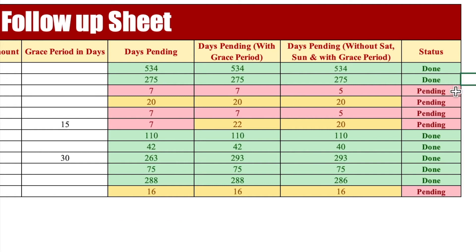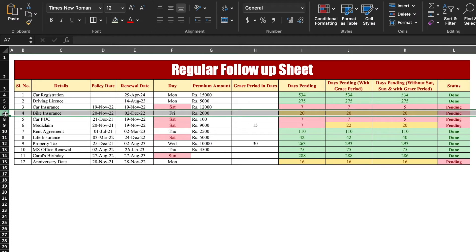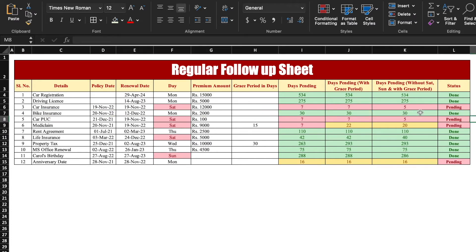If the policy renewal date falls on Saturday or Sunday, two days will be subtracted. Over here, status — if days will be more than 30 it will show 'Done', and if days will be less than 30 it will show 'Pending'. We will change some days. Bike insurance is showing 20 days. I will change the date and you will see when it's 30 days, it's Done, and the Pending status is removed. Also the highlights are getting changed.